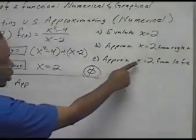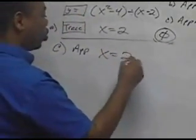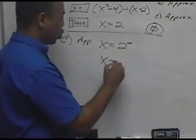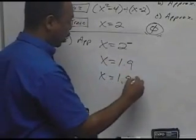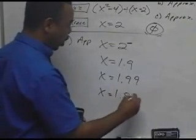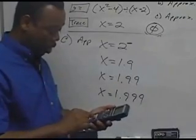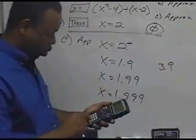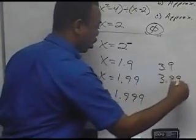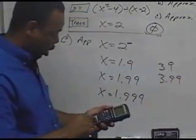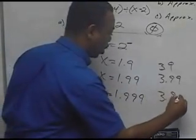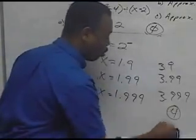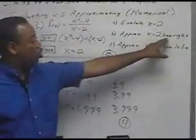Now let's approximate as x approaches 2 from the left. The negative side means we're approaching 2 from the left, so we'll use 1.9, 1.99, and 1.999. Trying 1.9 gives 3.9, and 1.99 gives 3.99. This approximates or approaches 4, so the approximation from the left is also 4.